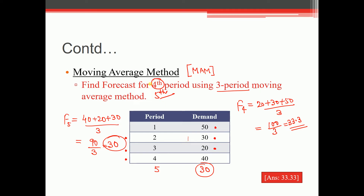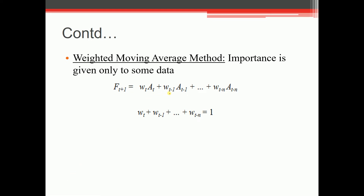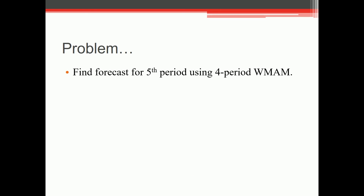Next is the Weighted Moving Average Method. Here, importance is given only to certain data. The formula is: F(t+1) = w(t)·A(t) + w(t−1)·A(t−1) + … As data gets older, the weight is reduced. The weights are fractions whose sum must equal 1. Here, t = current period, F(t+1) = forecast for next period, n = forecasting horizon, A = actual sales, and w = weight given to each period.